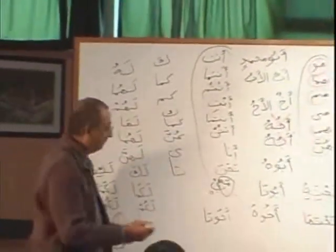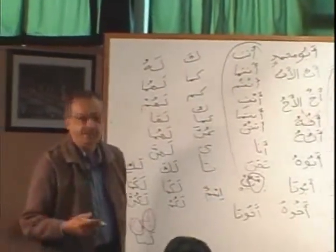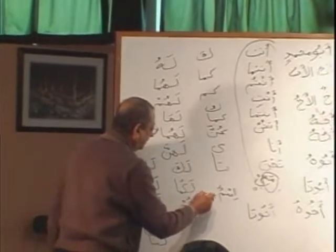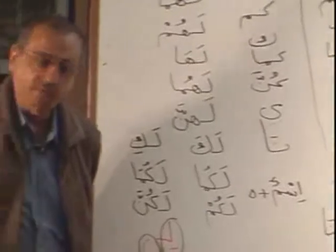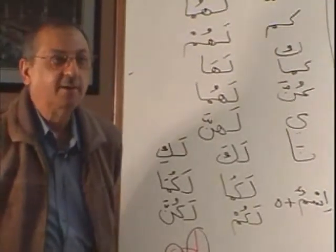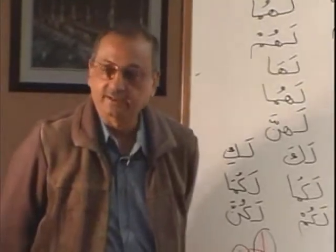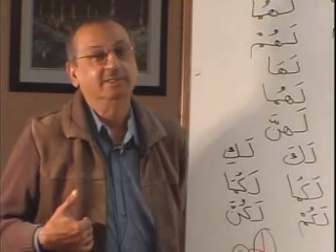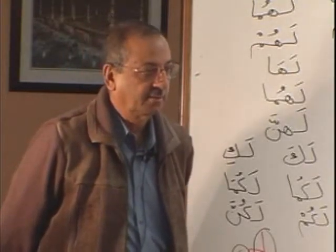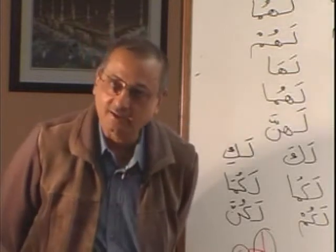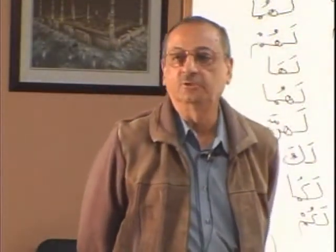Now we have one very nice thing to remember today. What is this? Ismun — name. If I say to you, make a mudaf mudafili with ism — how will you say? Ismuhu. Her name? Ismuha. Your name? Ismuka. Feminine? Ismu ki. My name? Ismi. Only five. Don't use plural with them, because that will make many changes. If you say ismu na, that is wrong — you will have to say asmaauna. So make a note for our next lesson: we are using five pronouns.